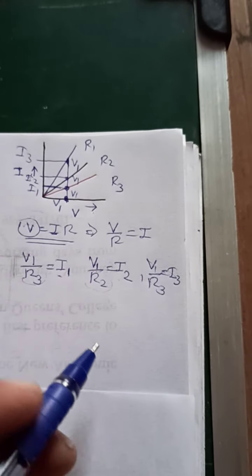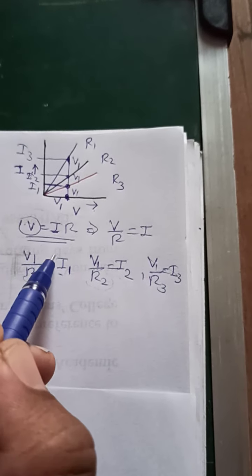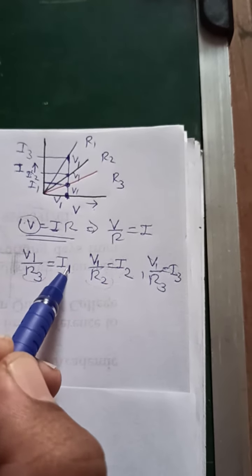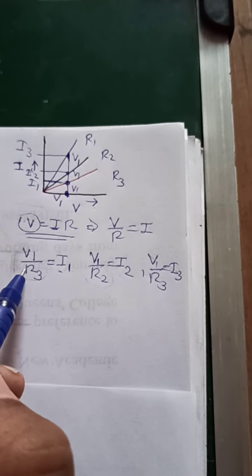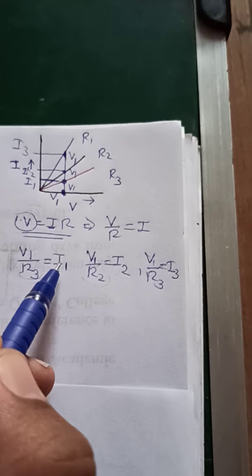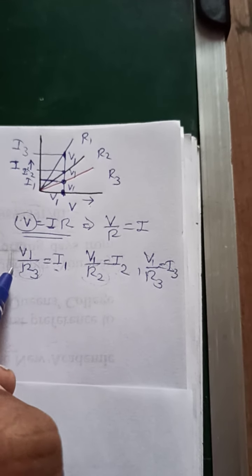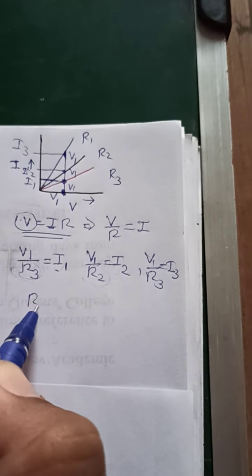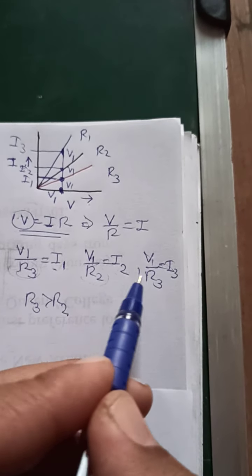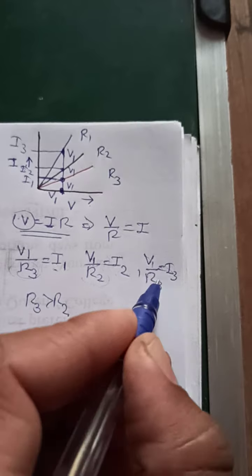I repeat again. In V, there is no change. But I2's value is greater than I1. I1 is small, so mathematically, if we look at this as a fraction, V divided by I1 will be greater. So R3 will be greater than R2.